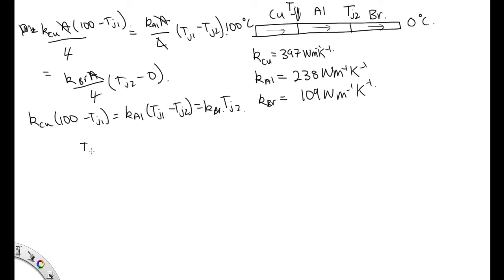We can write that TJ2, using this part and this part, is equal to K for copper, 100 minus TJ1, over K for brass.